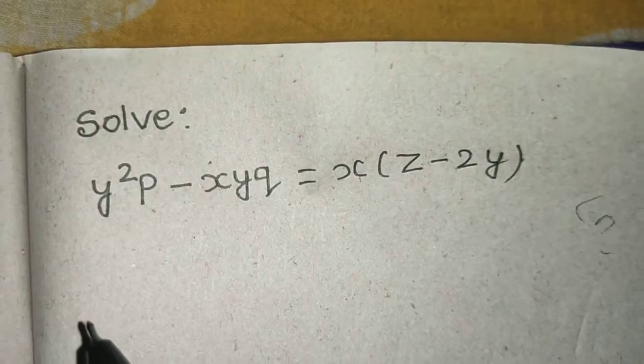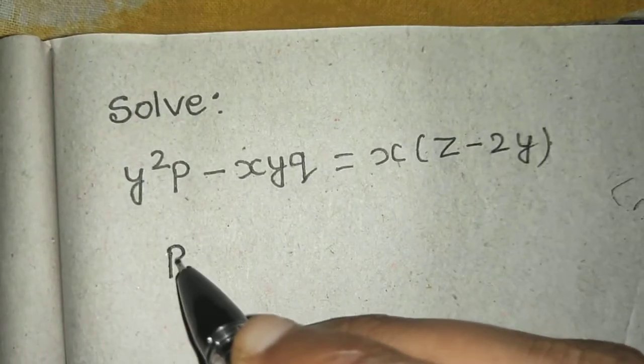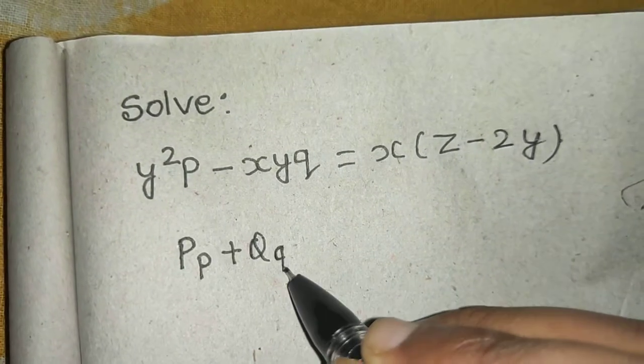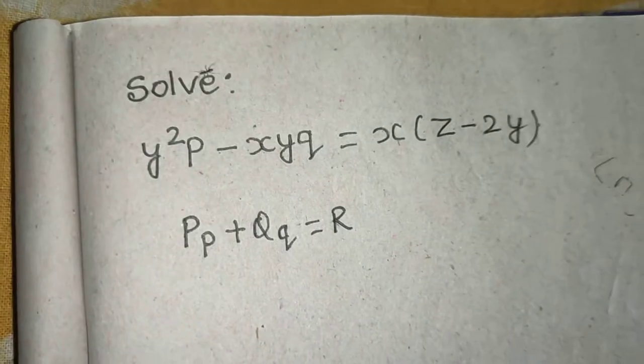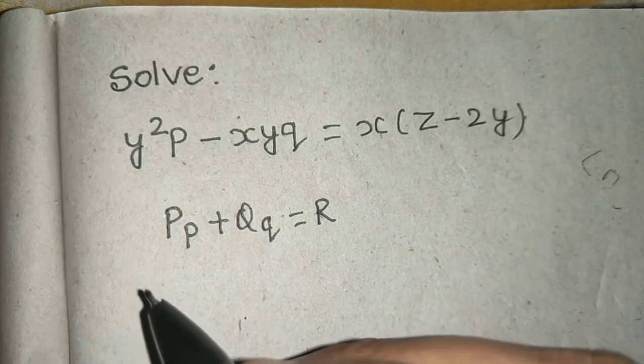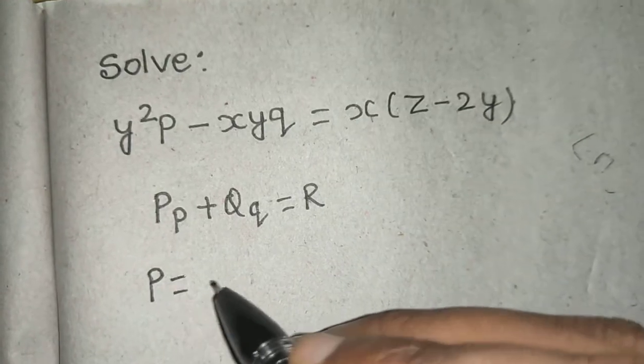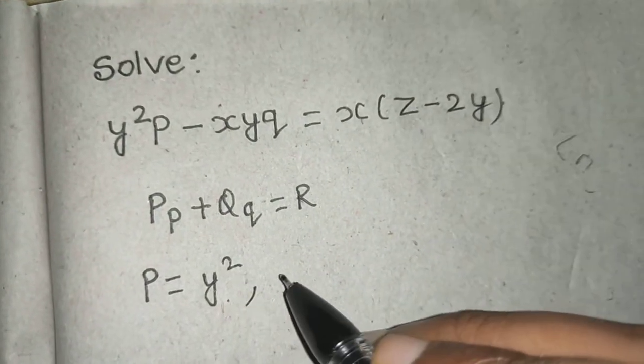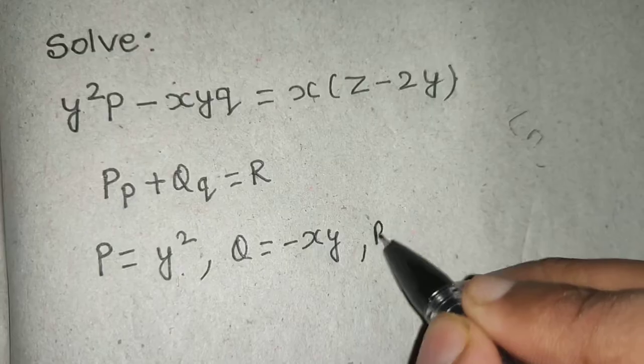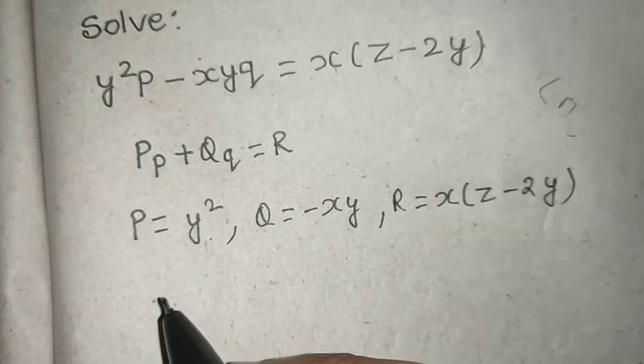First of all we have to identify it from the format which is Pp + Qq = R. This is the basic format. Now if you look at this form then you can easily identify that your capital P here is y², your capital Q here is -xy, and your R here is x(z-2y).